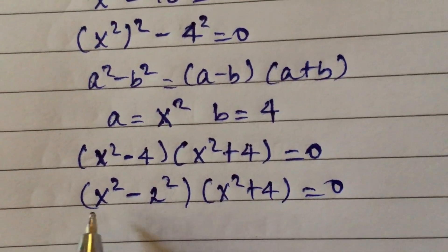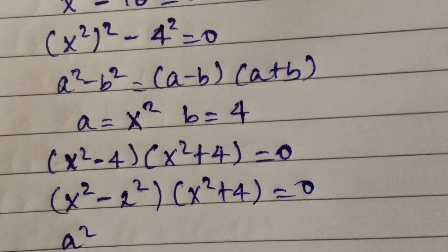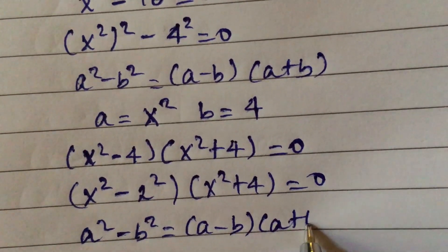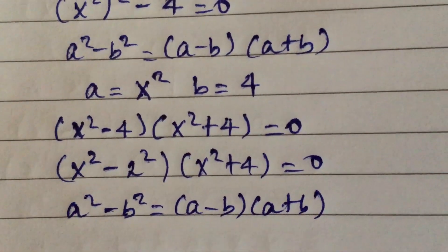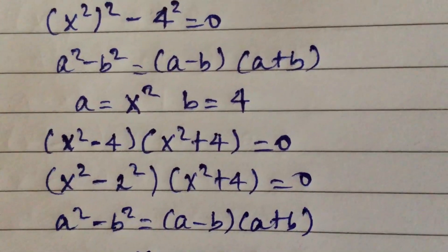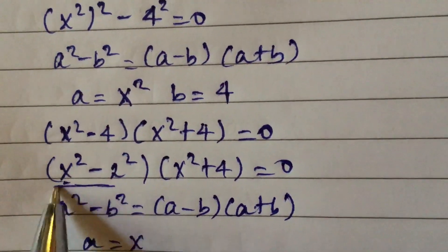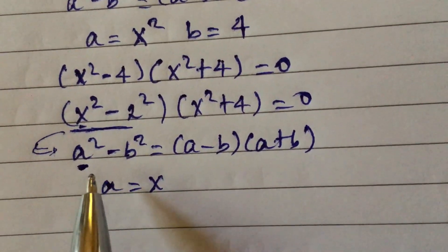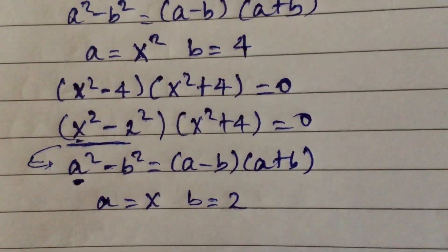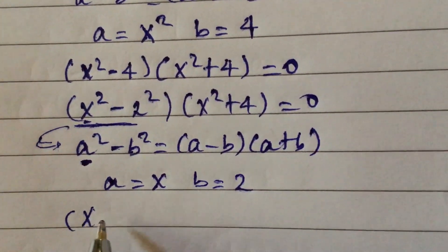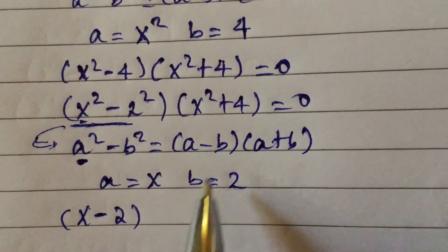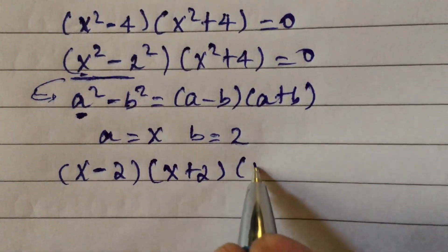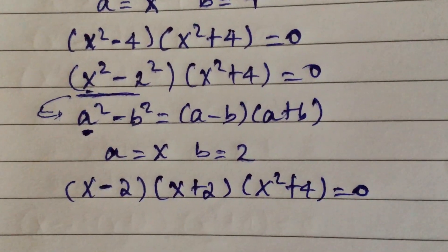Now we apply the formula a squared minus b squared equal to a minus b times a plus b again. The value of a equals x and the value of b equals 2. So we get x minus 2 times x plus 2 times x squared plus 4, equal to 0.